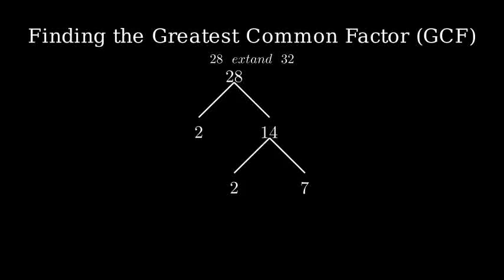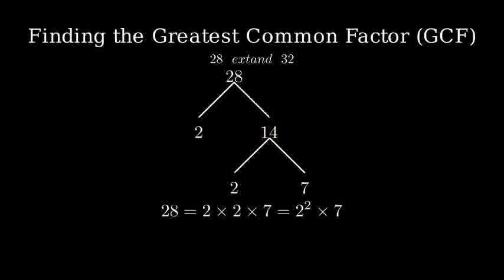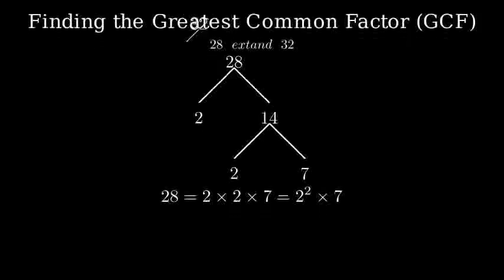Let's start with 28. 28 can be broken down into 2 times 14. Then 14 breaks down into 2 times 7. Since 7 is a prime number, we stop here. So 28 equals 2 times 2 times 7, or 2 squared times 7.